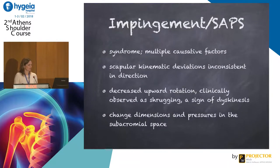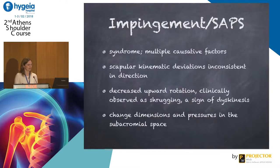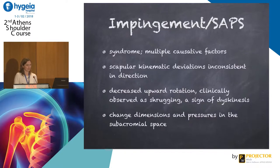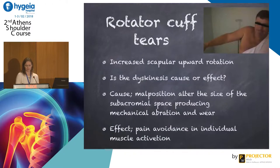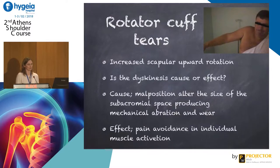We will hear more about impingement later, but it is definitely not a single diagnosis — it's more like a syndrome where reports of scapular kinematics are inconsistent in direction. However, most reports indicate a decrease in upward rotation of the scapula. Clinically, that might be observed as shrugging, a sign of dyskinesis, which may change the dimensions and pressures in the subacromial space. For rotator cuff injuries, most often an increased scapular upward rotation is seen, and you might ask if the dyskinesis is the cause or the effect.